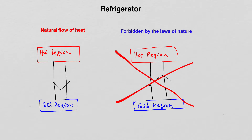However, if I use a device known as a refrigerator and insert it in between the two regions — the cold and the hot region — then it is possible to extract heat from the cold region and deposit it into the hot region. But the price for that is that work must be done by the refrigerator.